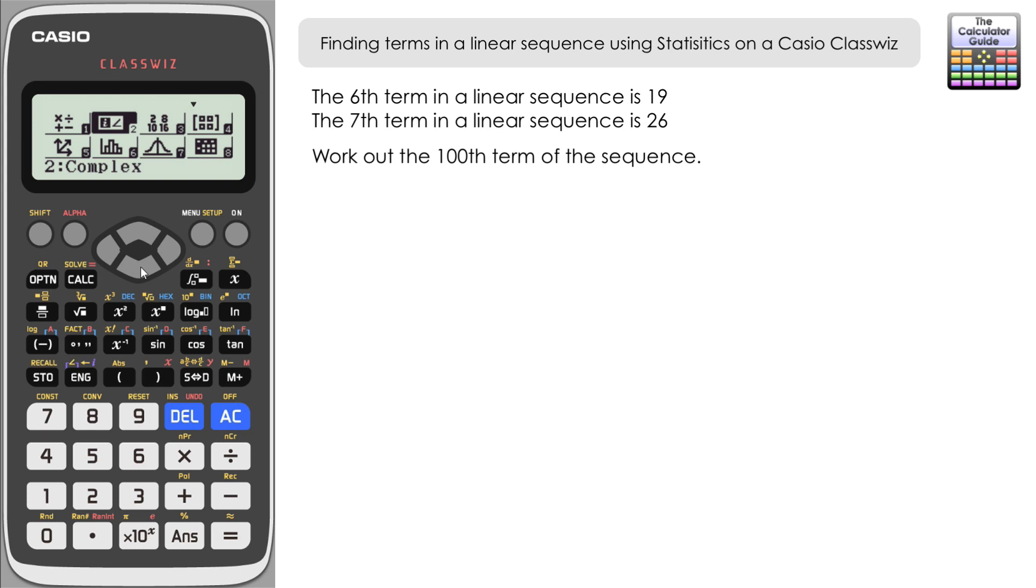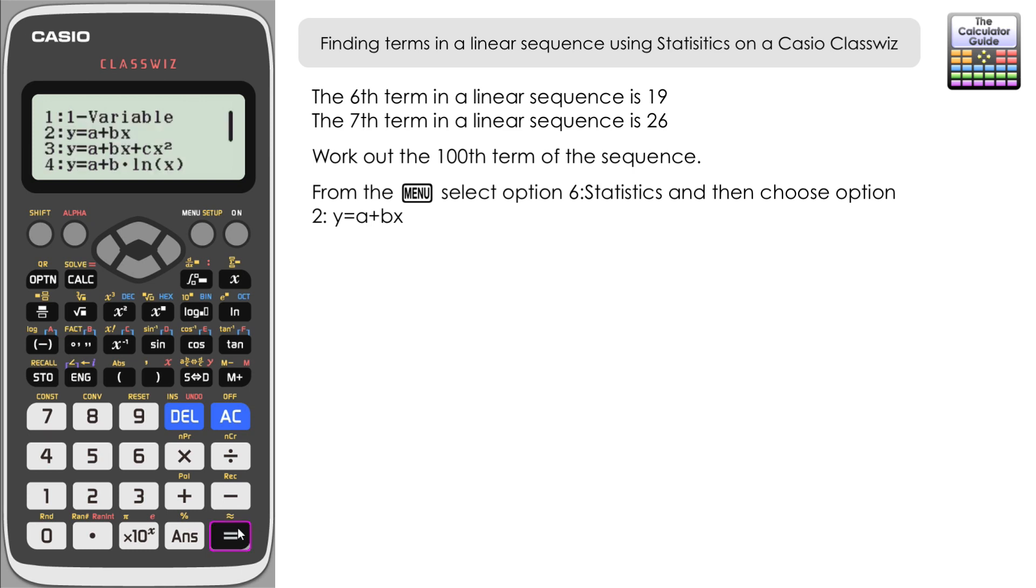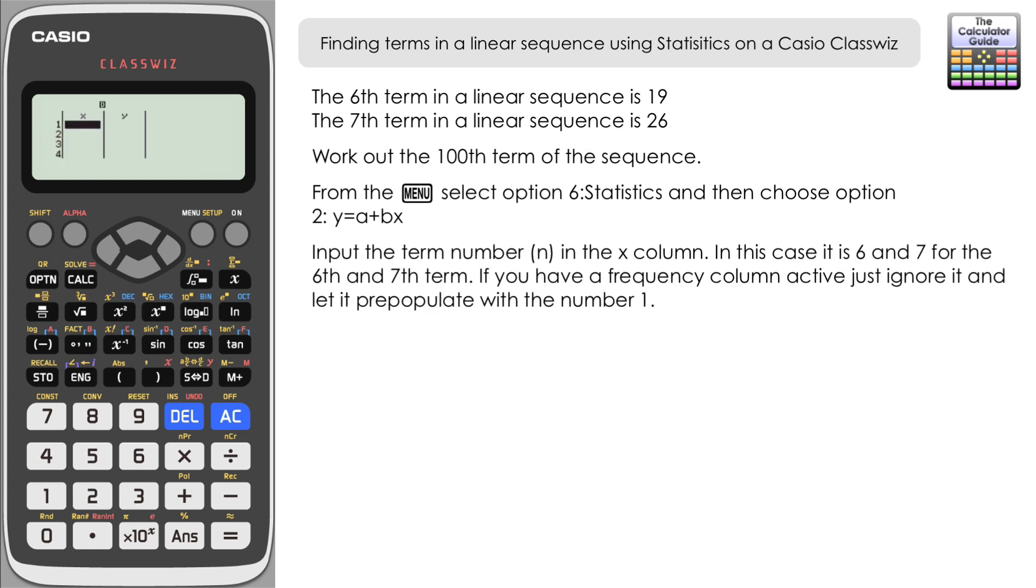So let's go to statistics mode on the calculator. This is option 6 on the 991EX, but it might be option 2 on other models. From the menu we're going to choose option 2. This depicts a linear relationship—we're already told that it is a linear sequence, so we're going to choose option 2 here.